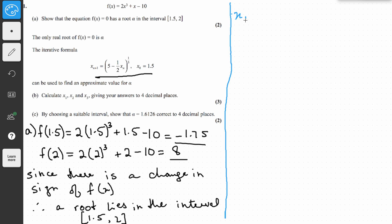So the value that you will get for x₁ is 1.6198 to 4 decimal places. And then x₂ is 1.6122, x₃ is 1.6126.